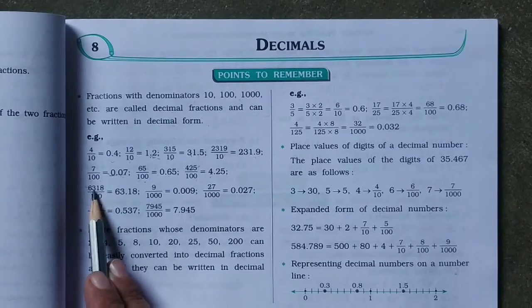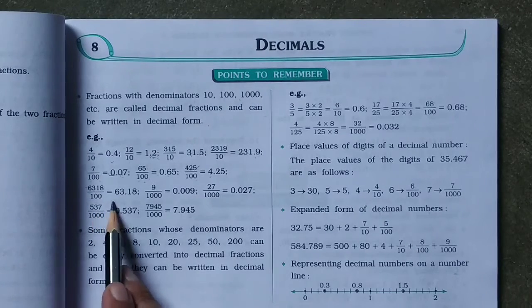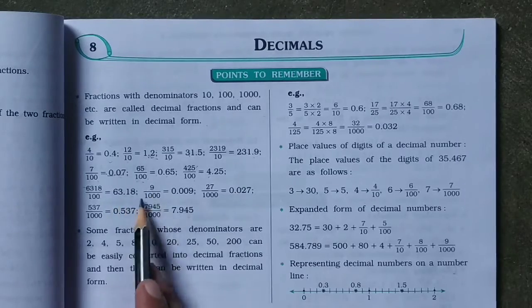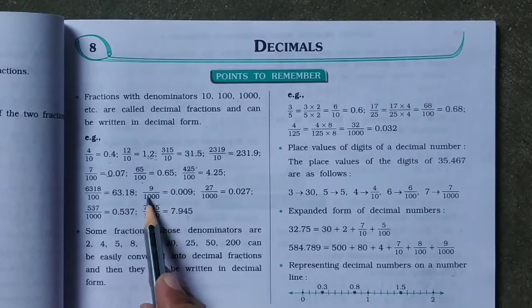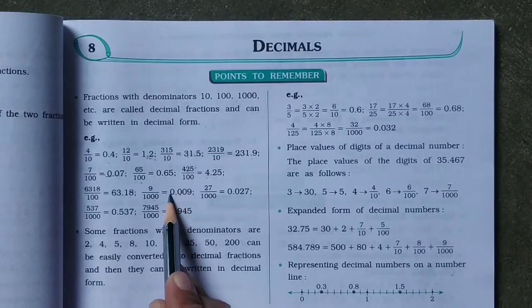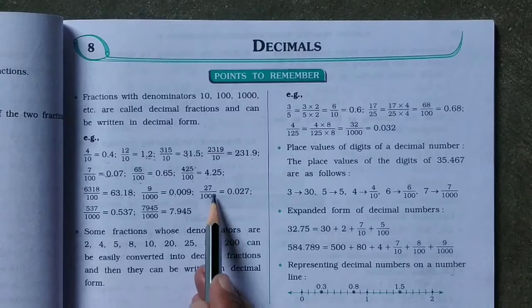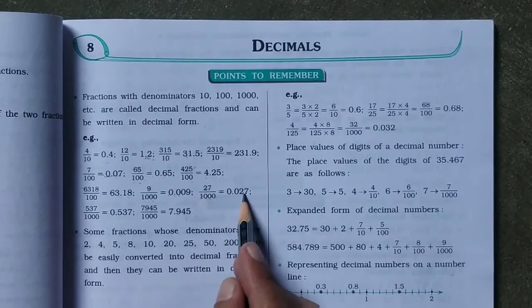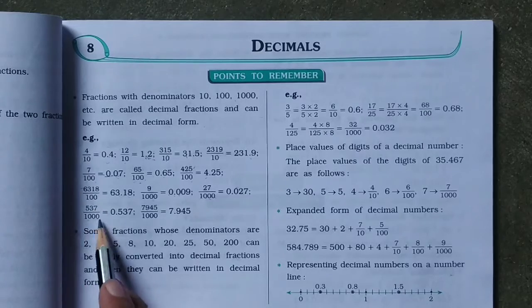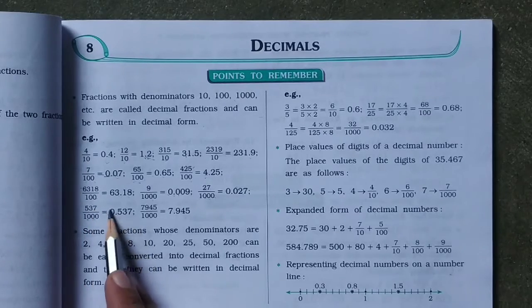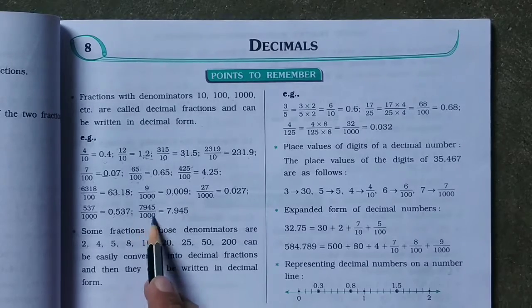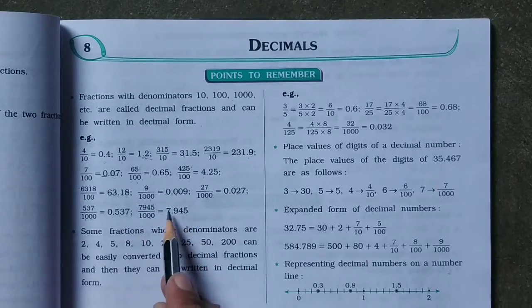Six hundred three hundred eighteen divided by 100 gives 63.18 — two zeros, so two numbers after point. Nine divided by 1000 — three zeros, only one number so add two zeros: 0.009. Twenty-seven by 1000 — three zeros but two numbers, so add one zero: 0.027. Five hundred thirty-seven by 1000 — three zeros, three numbers, giving 0.537. Seven thousand nine hundred forty-five by 1000 — three zeros, three numbers: 7.945.